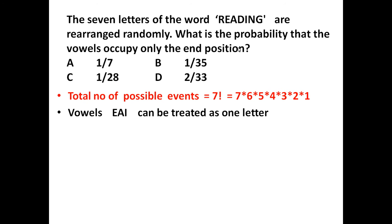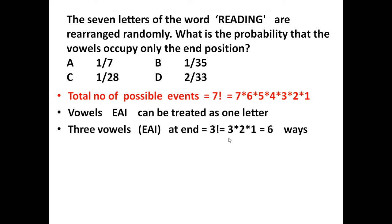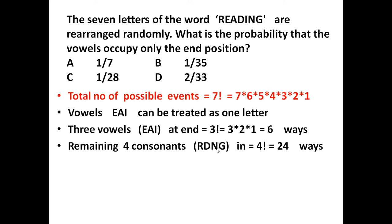We want the vowels to occupy only the end positions. The vowels in 'reading' are E, A, and I — there are 3 vowels. Considering these 3 vowels as a single group placed at the end, they can be arranged among themselves in factorial 3, which equals 6 ways. The remaining 4 consonants — R, D, N, and G — can be arranged in factorial 4, which equals 24 ways.